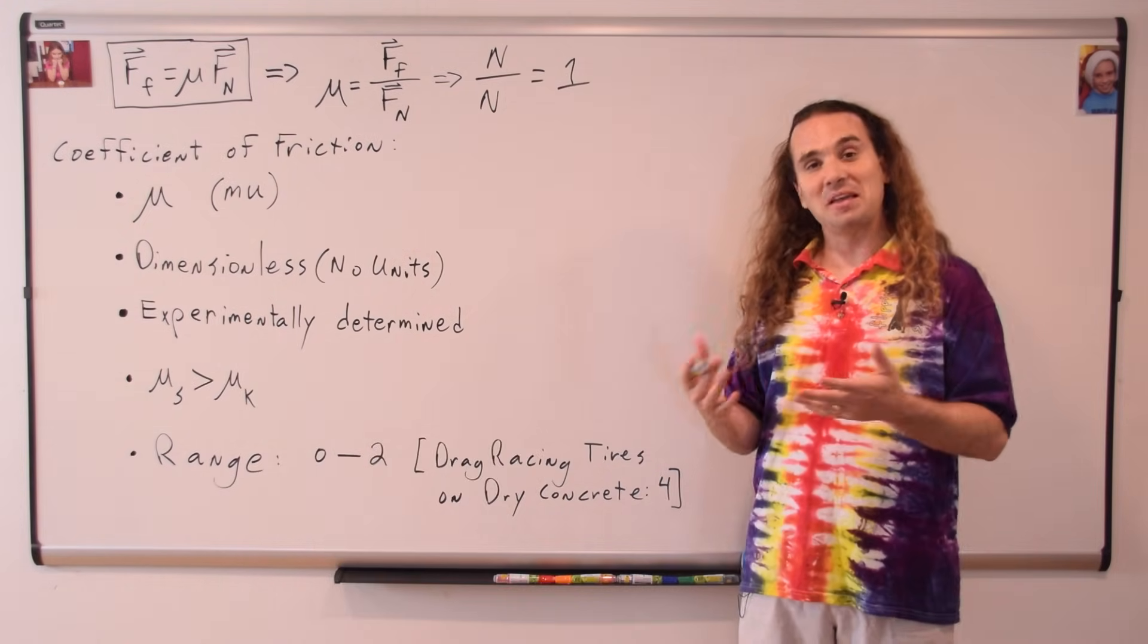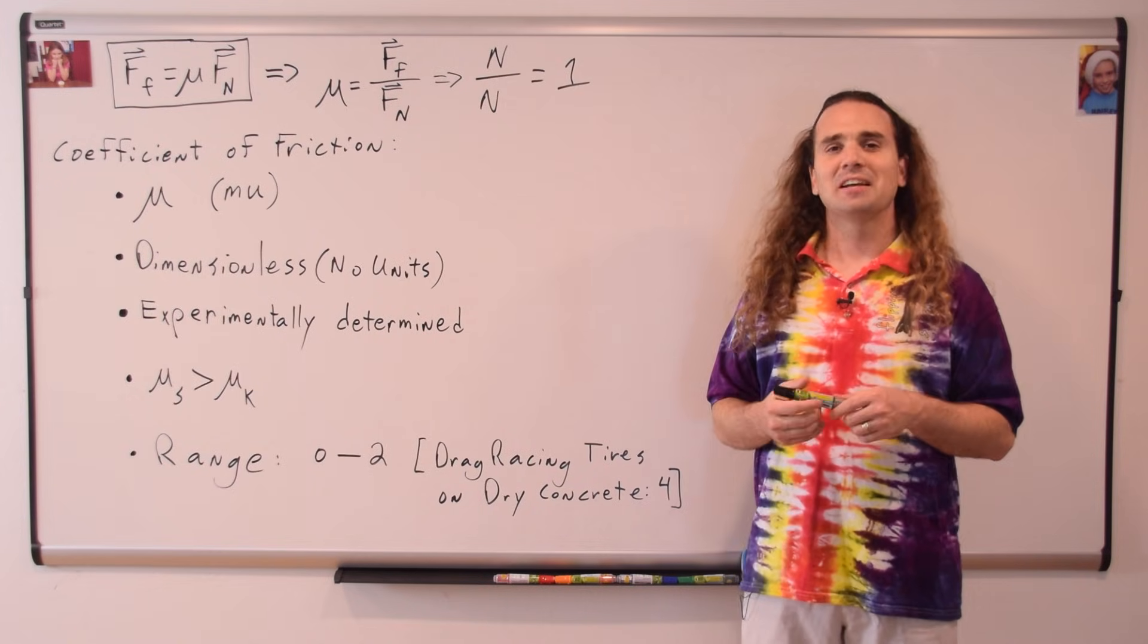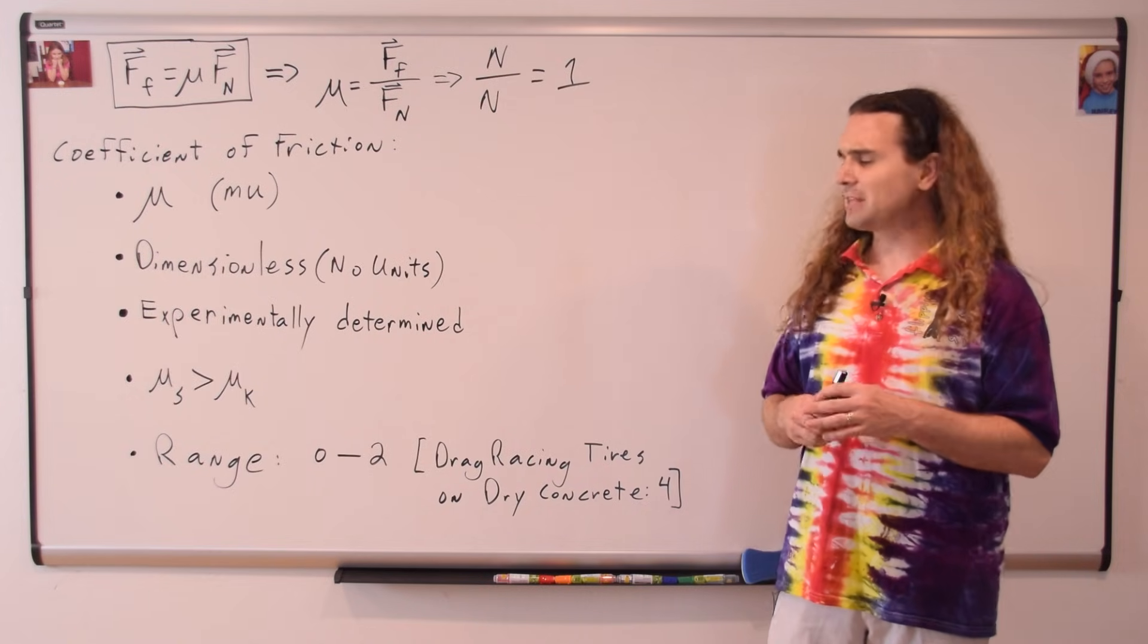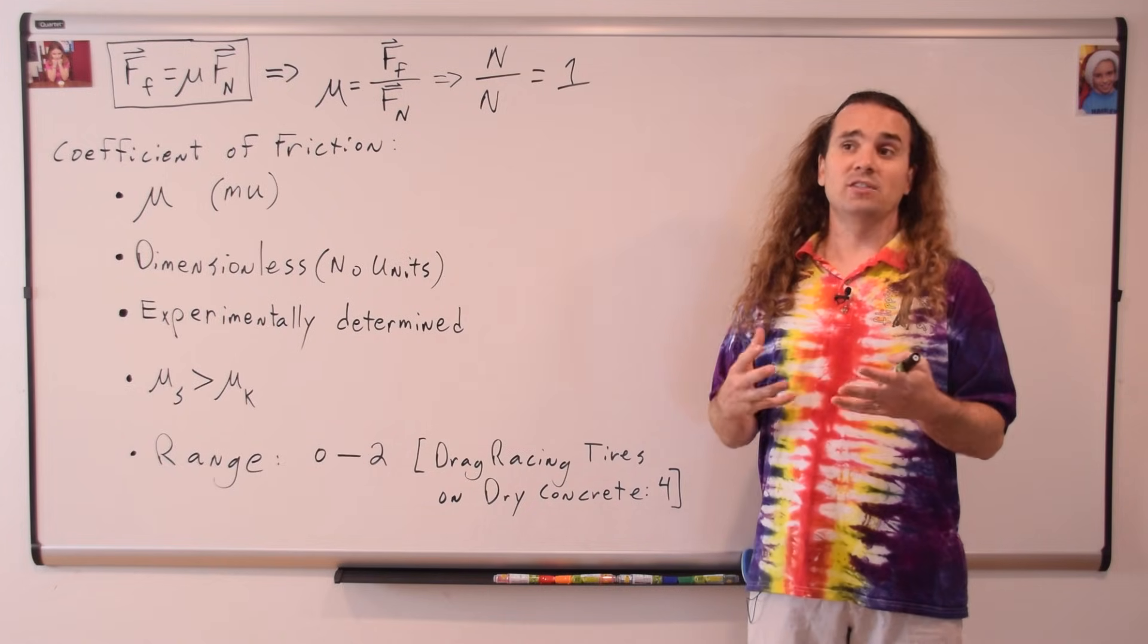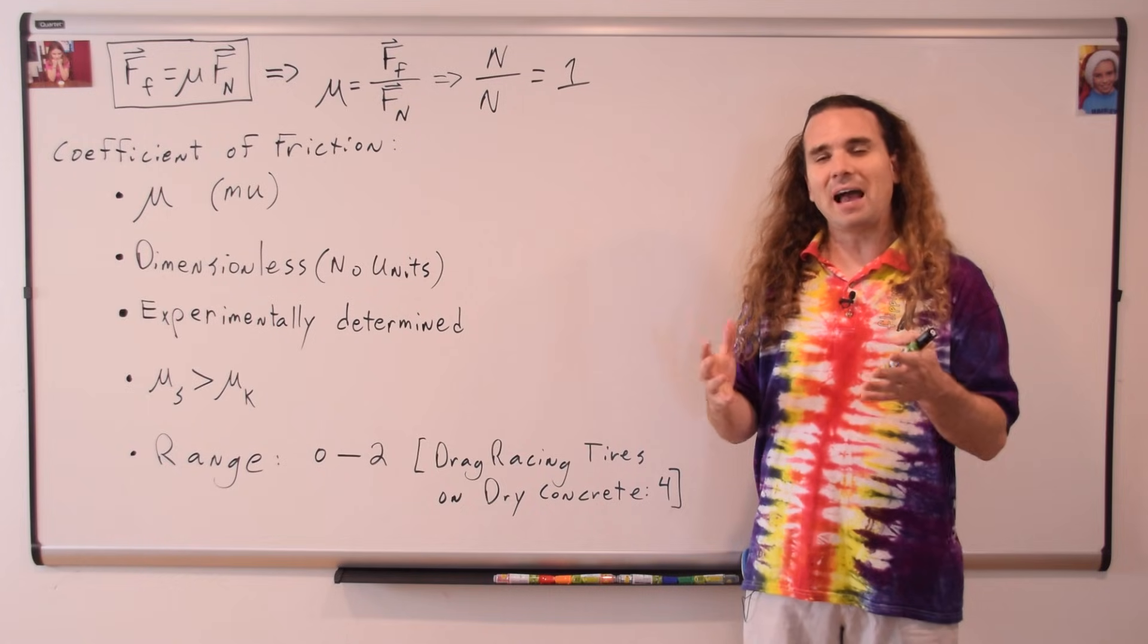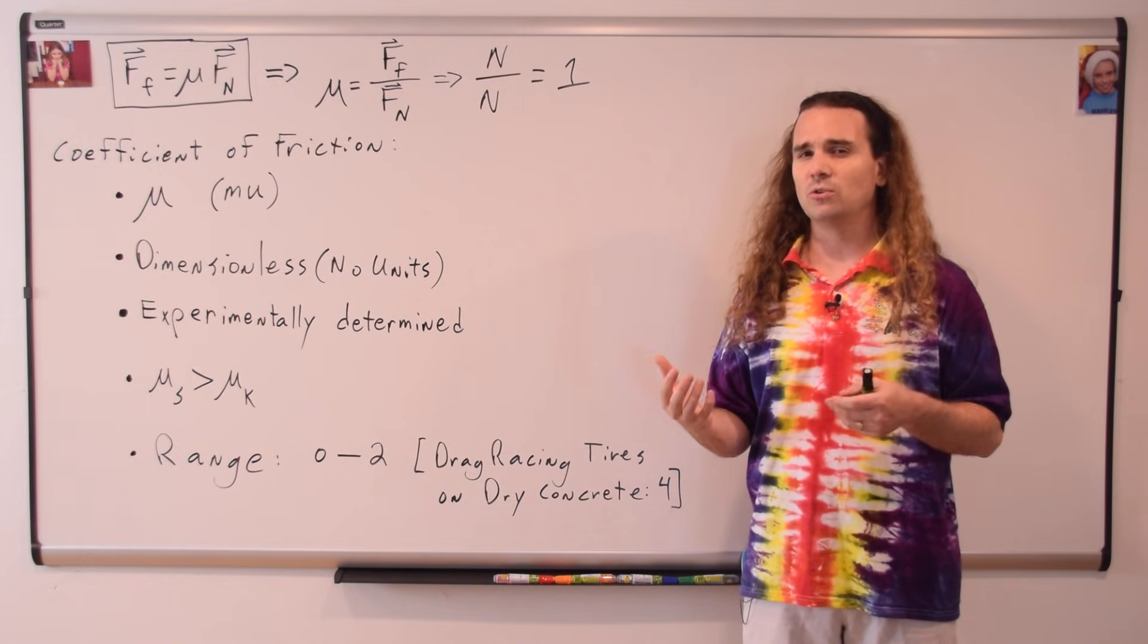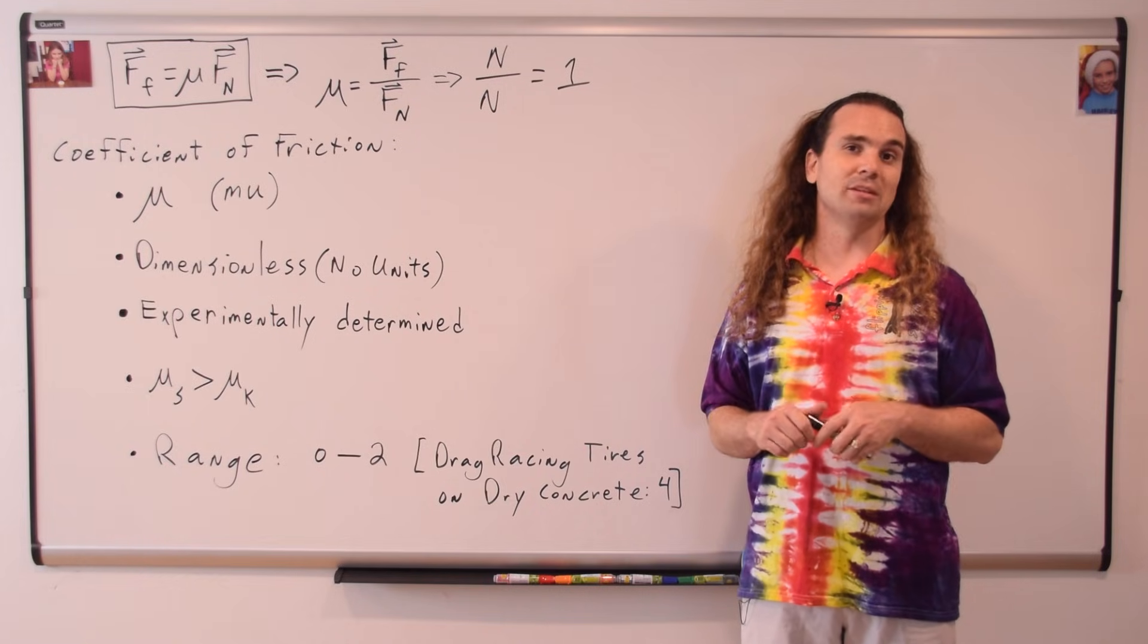Admittedly, drag racing is a bit of an extreme situation. Therefore, under normal circumstances, I would say a maximum is perhaps two. So, if you're solving a problem and it's under normal circumstances and you get something outside that range from zero to two, then I would say you need to re-examine your solution.